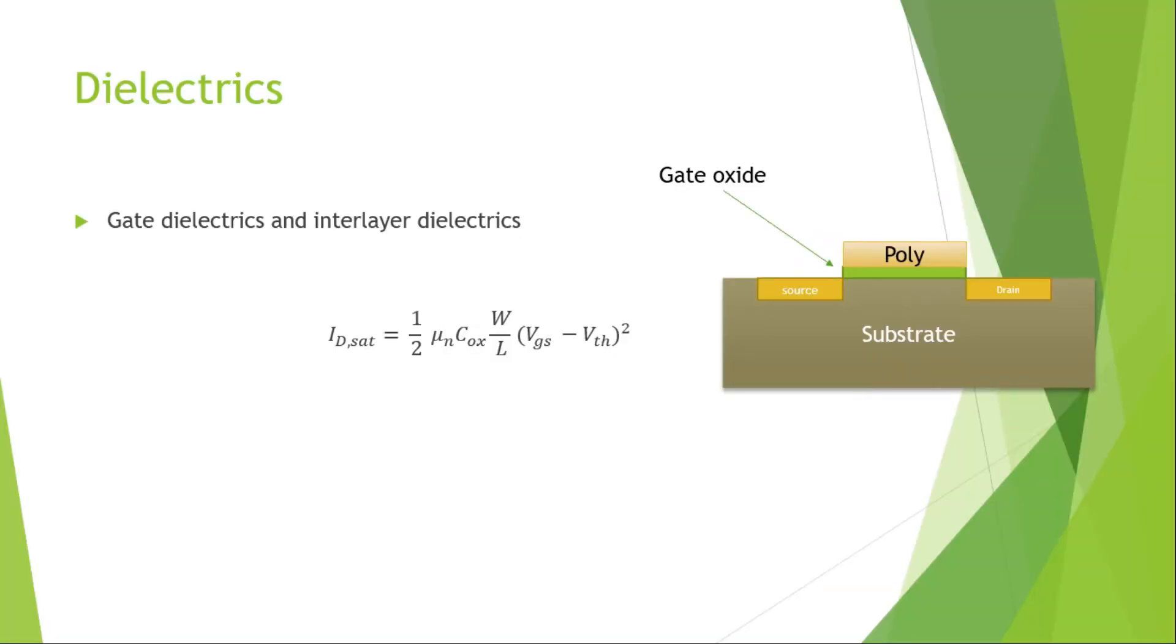When we say dielectrics, there are two types: gate dielectrics or gate oxide, and interlayer dielectrics. We will deal with these two separately.